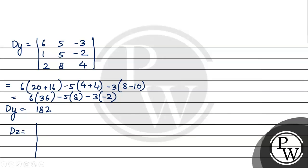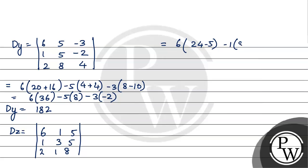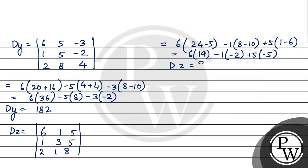Now Dz: replace the third column with D values, giving rows [6, 1, 5], [1, 3, 5], [2, 1, 8]. This equals 6 multiply by (24 minus 5), minus 1 multiply by (8 minus 10), plus 5 multiply by (1 minus 6). That gives 6×19 minus 1×(−2) plus 5×(−5), so the value of Dz is 91.